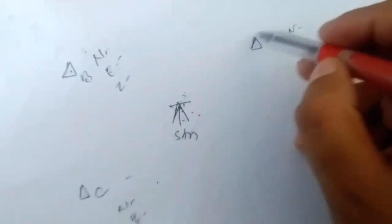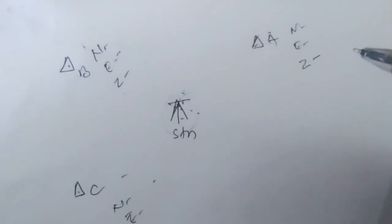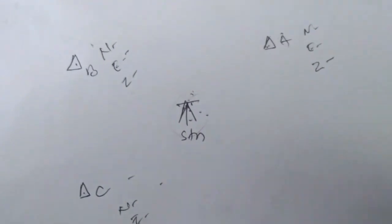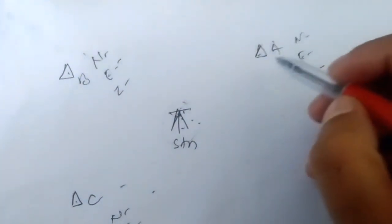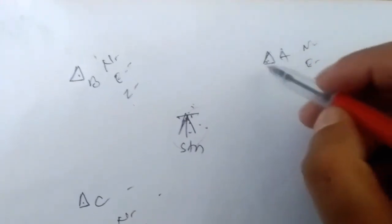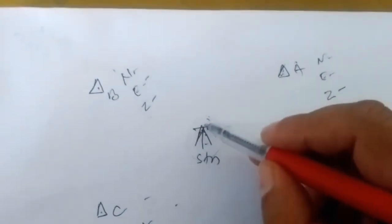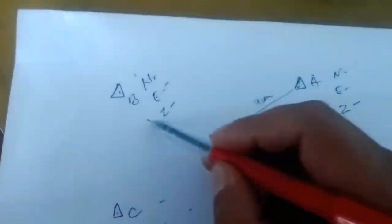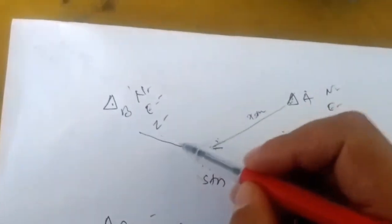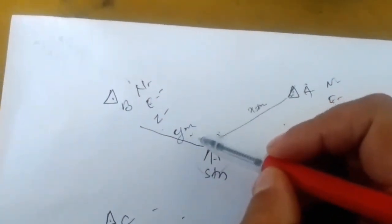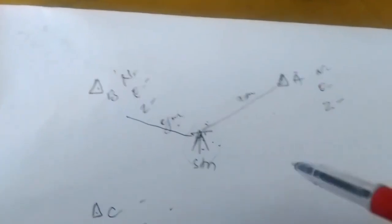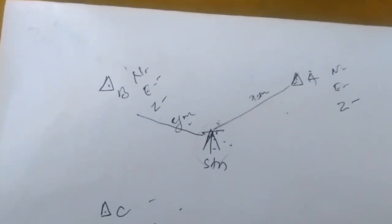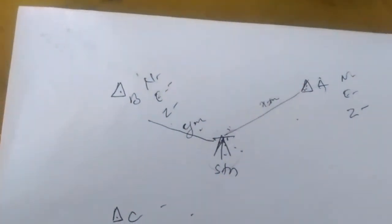On the Sokkia total station, resection is named 'three station' — it's just the name, the process is the same. Under the resection function, the known coordinates of the points are entered and the distance between the station and each point is measured. By using two point coordinates and distance, resection can be done, but it is better to use three point coordinates so that the accuracy level is maintained.